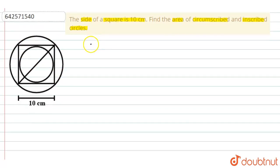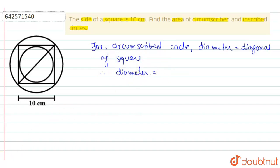So, for circumscribed circle, we can see that diameter is equal to diagonal of square. Therefore, diameter is equal to 10 root 2 cm because for a square of side x diagonal is equal to x root 2 cm. This is a rule.